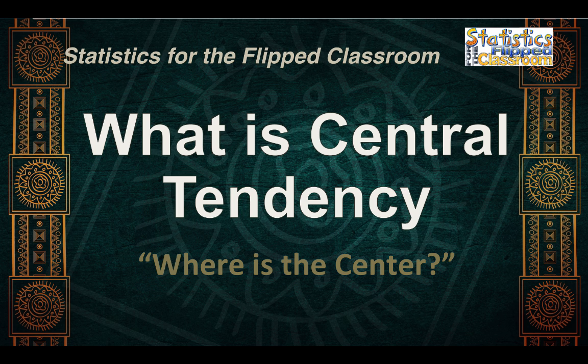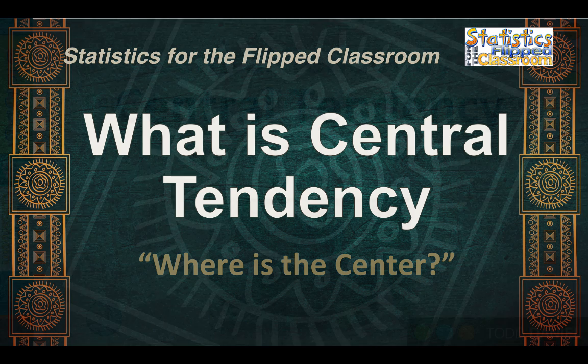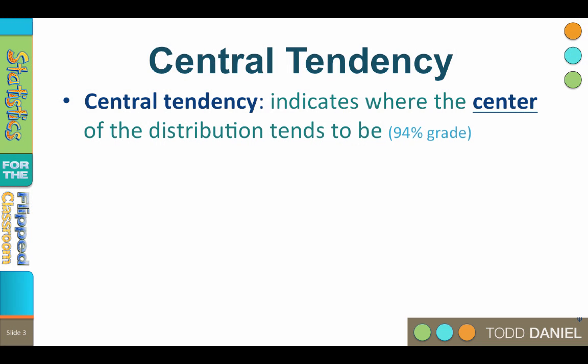We have two important questions about our data set. The first question is: what single number best represents our data? Our second question is whether the scores are packed together or spread out. The answer to our first question about the most representative score is going to be some measure of central tendency — a measure that indicates where the center or the middle of the distribution tends to be.